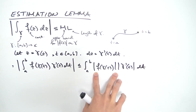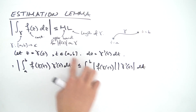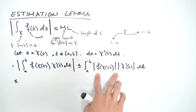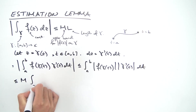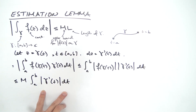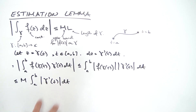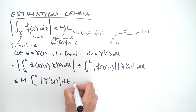The term |f(gamma(t))| represents the values of the function along the curve gamma, and we know this has an upper bound M. So the integral is less than or equal to M pulled outside the integral, times the integral from a to b of |gamma'(t)| dt. This last integral gives the length of gamma, since |gamma'(t)| is the speed, and integrating speed from a to b gives the distance traveled - the arc length.